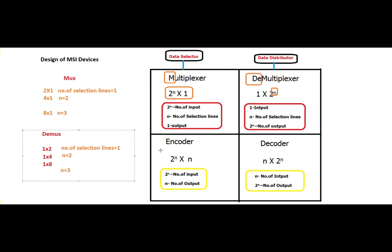To remember all four devices, note that D-D: demultiplexer and decoder are similar. The demultiplexer has 1 input and 2 power n outputs with n selection lines. The decoder has n inputs and 2 power n outputs. Encoder is just the opposite of decoder — it has 2 power n inputs and n outputs.